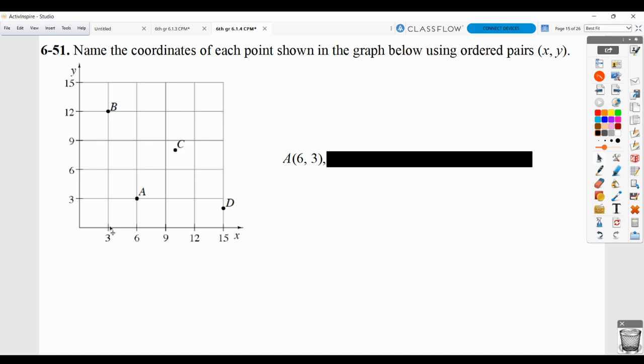B would be 3 across, 12 up. So 3, 12. C, it's kind of hard to tell what this is at, but based on the fact that this is 9 and this is 12, this is probably meant to be 10, and this is probably meant to be 8. So I would say that C would be 10, 8.